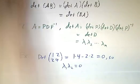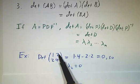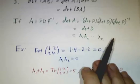Now let's go back to our matrix (1 2; 2 4). The determinant is 1 times 4 minus 2 times 2, which is 0. So whatever the two eigenvalues are, their product has to be 0. That means one of them has got to be 0.